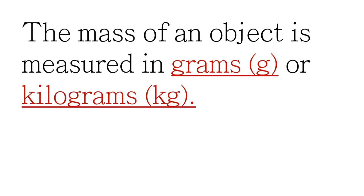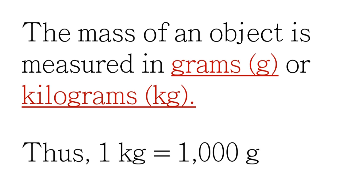Furthermore, the mass of an object is measured in grams (g) or kilograms (kg). The unit used in measuring mass is kilograms. One kilogram is equal to 1000 grams.